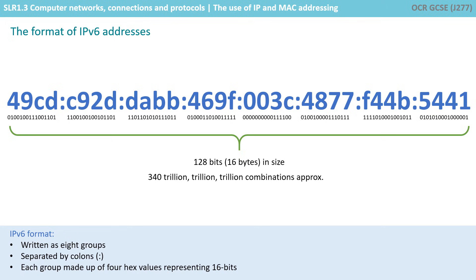Essentially, IPv6 works the same as IPv4, but this time it uses 128 bits. These are encoded as eight groups of four hexadecimal digits separated by colons. Behind the scenes, the number is still stored as a 128-bit, or 16-byte, binary number. This gives us approximately 340 trillion trillion trillion combinations of IPv6 addresses, which hopefully should be more than enough for the foreseeable future.